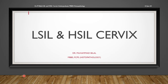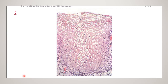We first move on to the normal histology of the ectocervix. We will be talking about the ectocervix, not the endocervix. This is the normal morphology. You can see the cells at the surface here, and these are the cells in the basal layers.